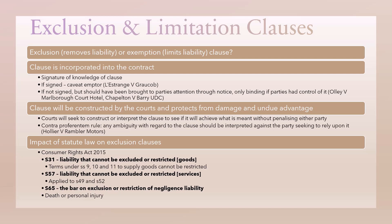Secondly, we need to look at how the clause is constructed or interpreted. This is only a problem if there's ambiguity. If it's very clear, you simply say the clause is clear and is interpreted in favor of the defendant. If it's unclear, we apply the contra proferentem rule — if there's ambiguity, it goes against the party seeking to rely upon it, so it probably won't be part of the contract. This rule is most likely to appear in a short-form question asking why an exclusion clause is invalid.